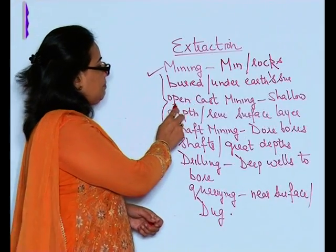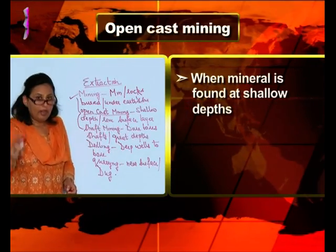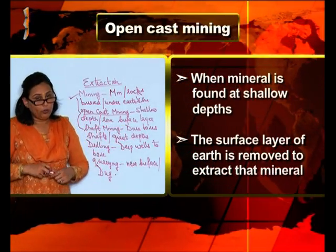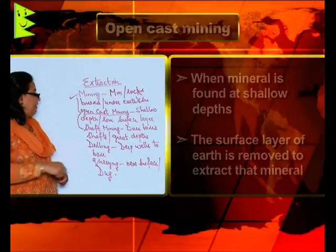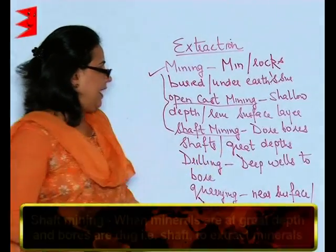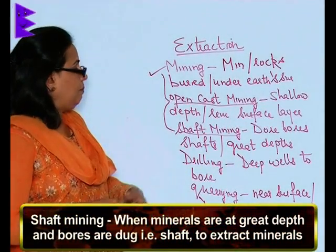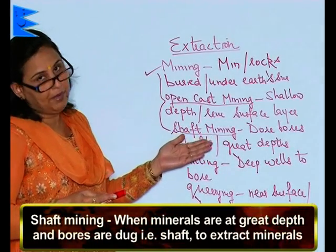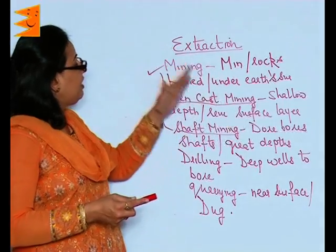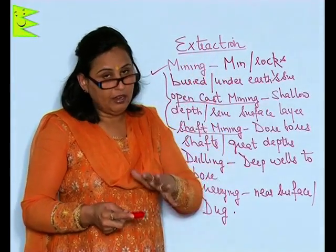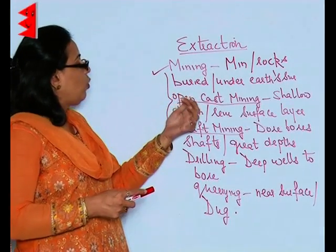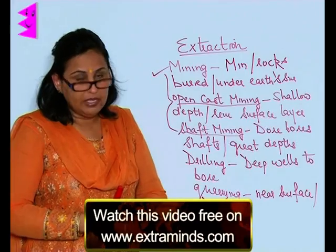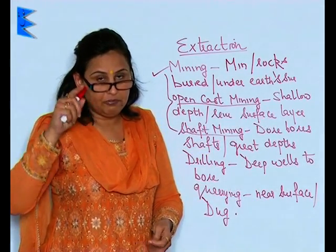Open cast mining is done when the mineral is found at a shallow depth, and the surface layer of the earth is removed to extract that mineral. Shaft mining is done when the mineral is at a great depth — bores are dug which are called shafts. So, open cast mining is for shallow depth minerals and shaft mining is for minerals at very deep levels.